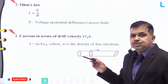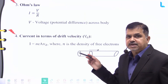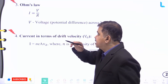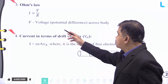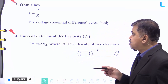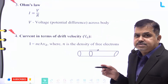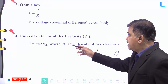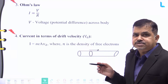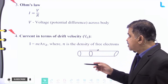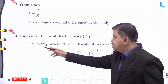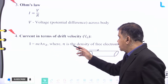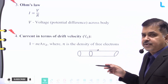Number three: Ohm's Law in its mathematical form is given by I equal to V by R, where V is the voltage or potential difference across the body and R is the resistance of the body. Number four: current in terms of the drift velocity v_d is given by I equal to n × e × A × v_d, where n is the density of the free electrons.